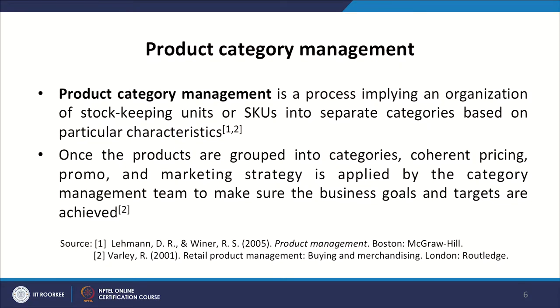Product category management is a process implying an organization of stock keeping units or SKUs into separate categories based on particular characteristics. Once the products are grouped into categories, coherent pricing, promotion and marketing strategies are applied by the category management team and product managers at large to make sure business goals and targets are achieved. Coherence in pricing and promotion is a very important thing which can be brought through this kind of element.